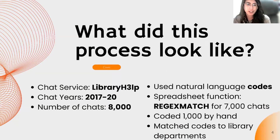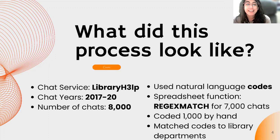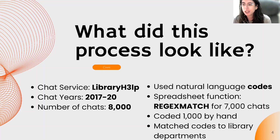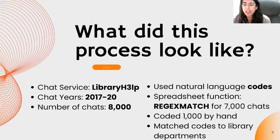So what did this process look like? The chat service we were using at the time was Library Help. We used chats from the years 2017 to 2020, so this was all pre-pandemic. The number of chats we looked at were 8,000 total, and we coded them using natural language codes. It would take a very long time to do 8,000 chats by hand, so we used the spreadsheet function Regimax for the first 7,000 chats to get those with natural language codes, and then we were left with 1,000 chats that we coded by hand. We took all those codes and matched them to different library departments to help break them up and organize the chat questions.